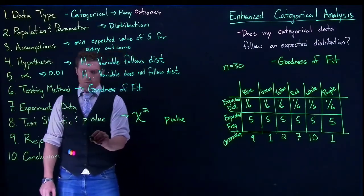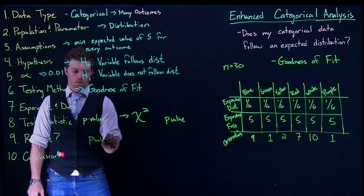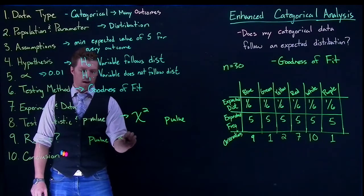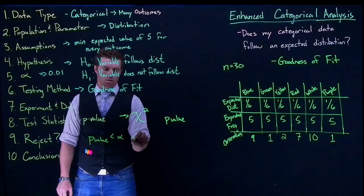Rejection is still the same. If our p-value is less than alpha, we are going to reject.